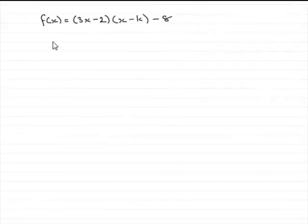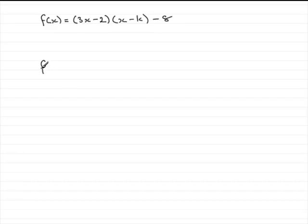This is a nice easy question. We've got f(x) = (3x - 2)(x - k) - 8 and asked to find the value of f(k). And to do this, all we need to do is wherever we see an x, replace it with a k.